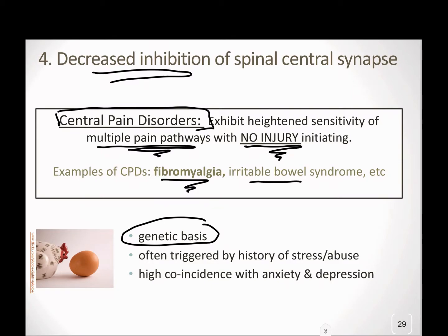A lot of times that can be triggered by a history of stress or abuse inside a family that has this genetic predisposition. Kids who had a lot of stress as children are often more likely to develop a chronic pain syndrome. We see a high coincidence with anxiety and depression disorders, and that'll make a lot of sense when we look at what neurotransmitters are involved. Anxiety and depression had several neurotransmitters involved; the most important seemed to be serotonin, with some norepinephrine and dopamine involvement as well.